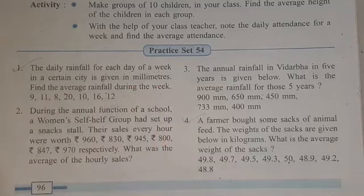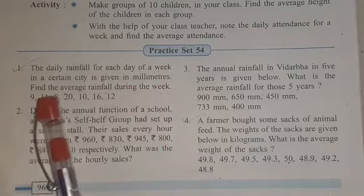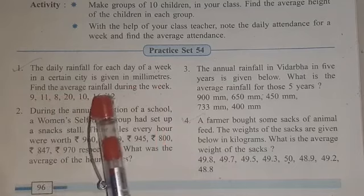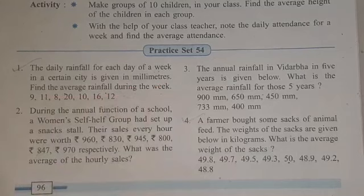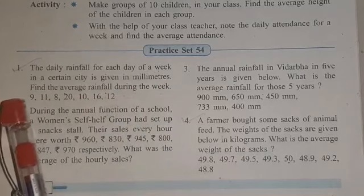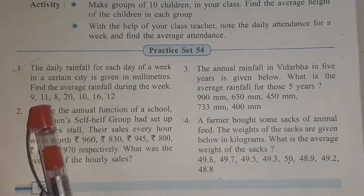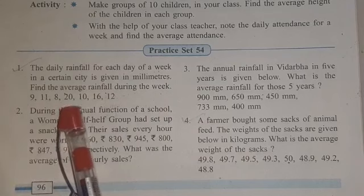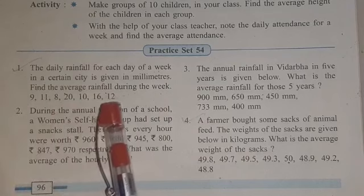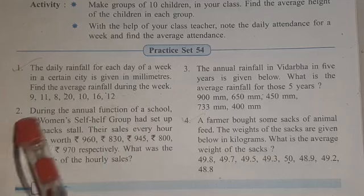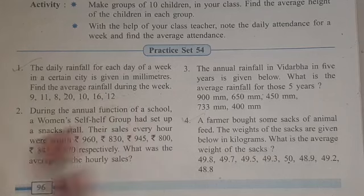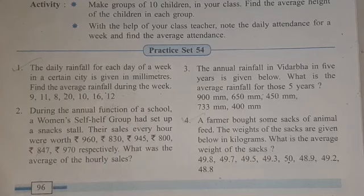What we have to find out is the average rainfall during the week. The rainfalls for each day are given: 9, 11, 8, 20, 10, 16, and 12 millimeters. So all these numbers have the unit millimeters, and they are asking us to find out the average.